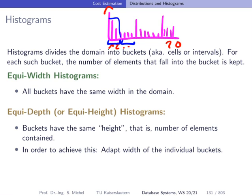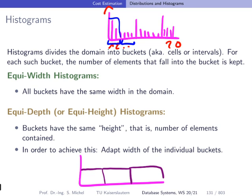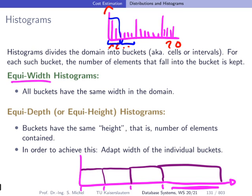An alternative is the so-called equi-depth histogram, where you create buckets that have the same depth or height — they always contain the same number of elements. To achieve this, you have to adapt the width of the histogram buckets. Unlike equi-width, the width here is not fixed; you can change it. Some buckets are wider than others in order to put the same number of elements in each bucket, so they all have the same height.